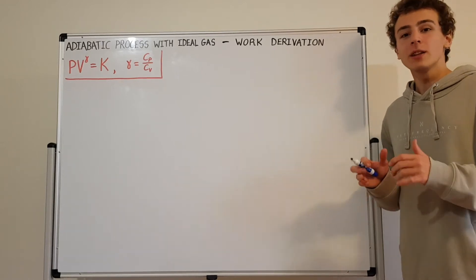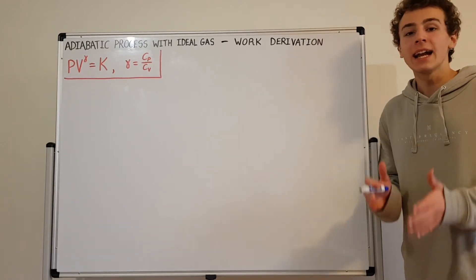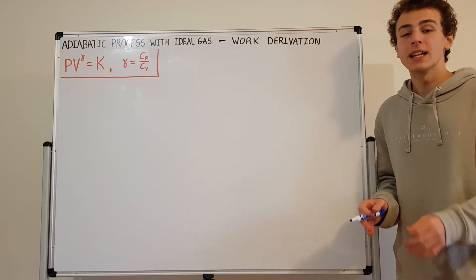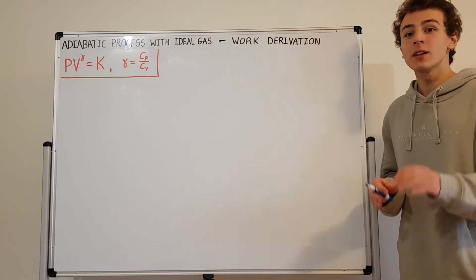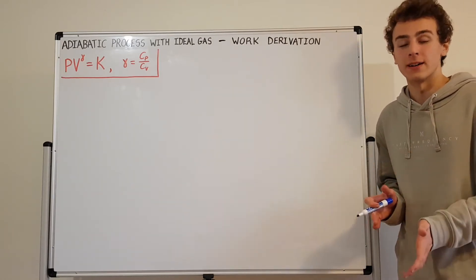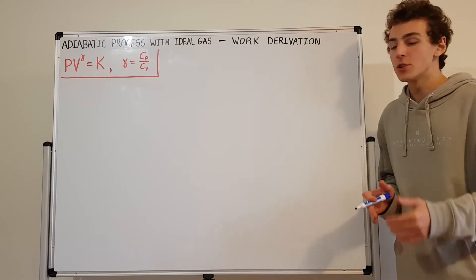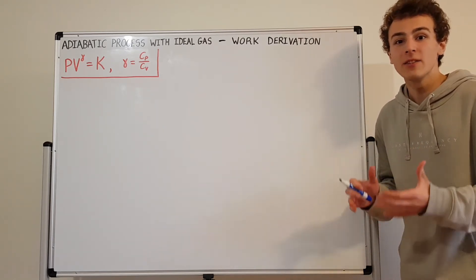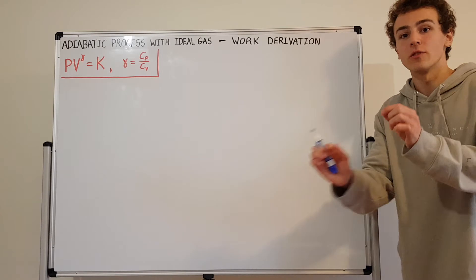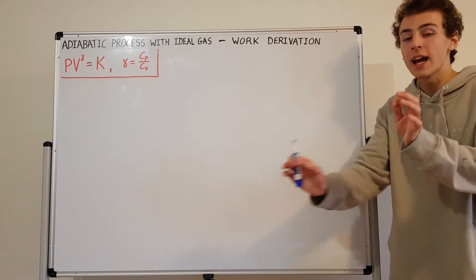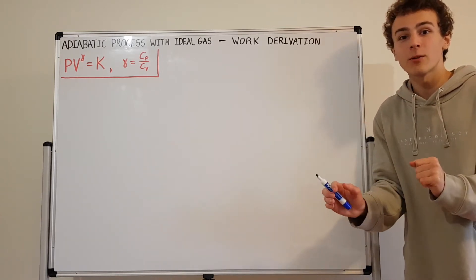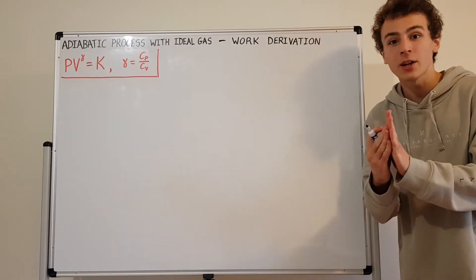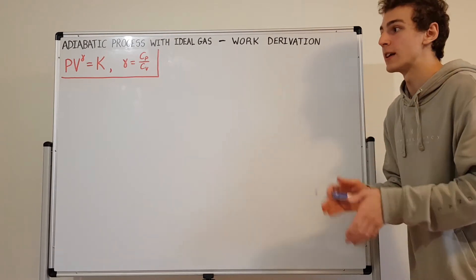In this video I'm going to be talking about an adiabatic process with an ideal gas, and specifically I'm going to do a derivation of the work done. The work done corresponds to the area under the PV diagram curve. If you draw a curve of the adiabatic process in the PV diagram and find the area underneath that curve, that is the work done.